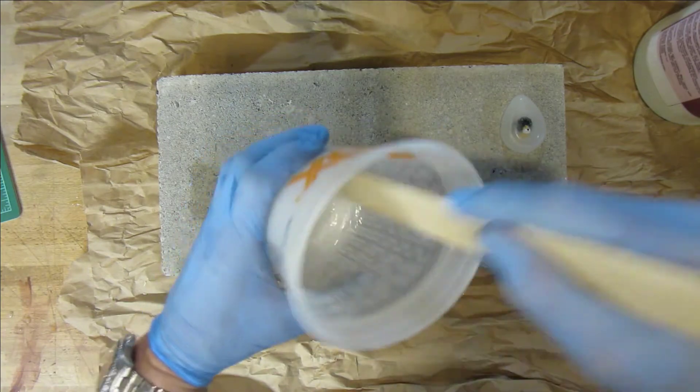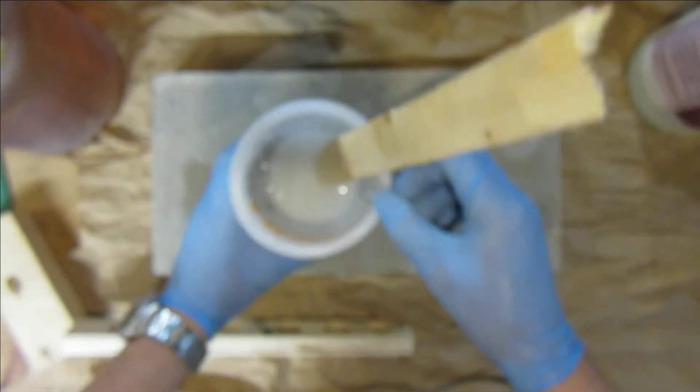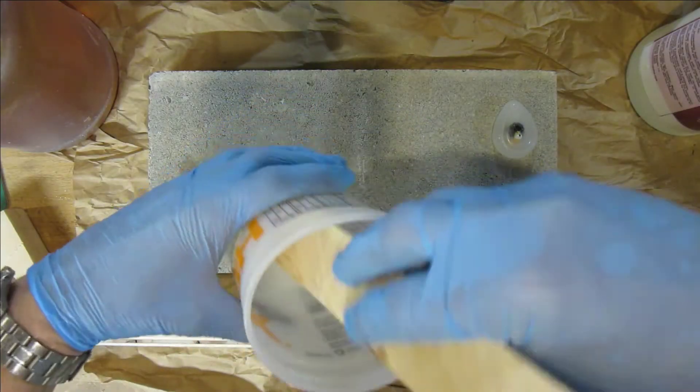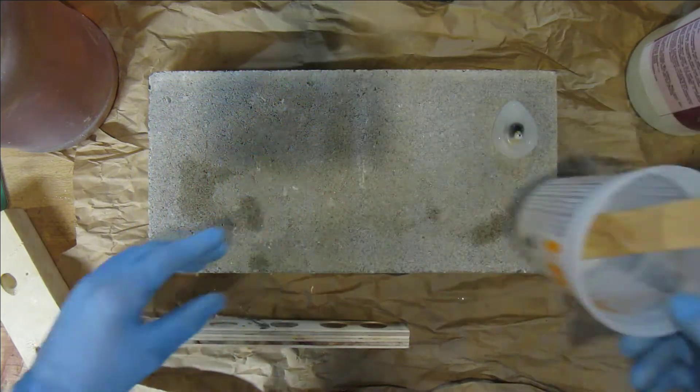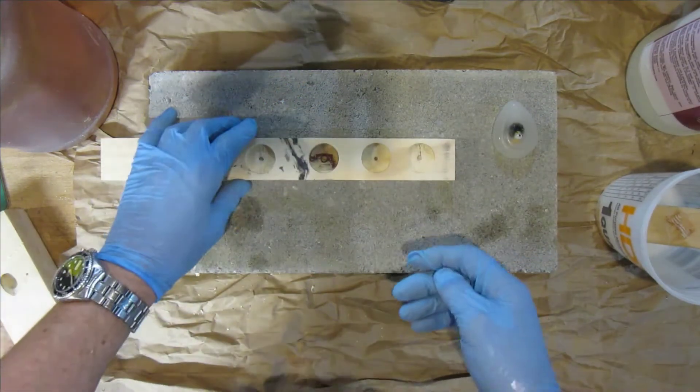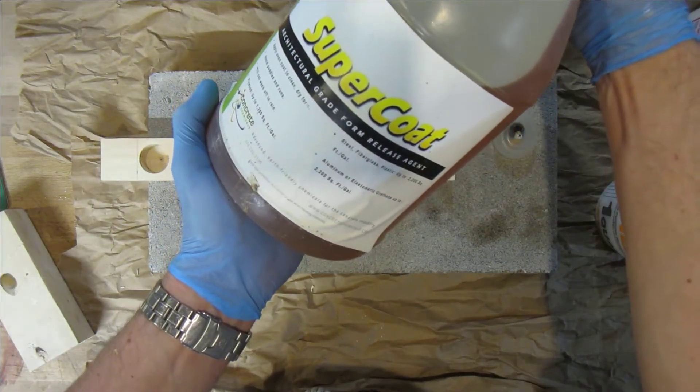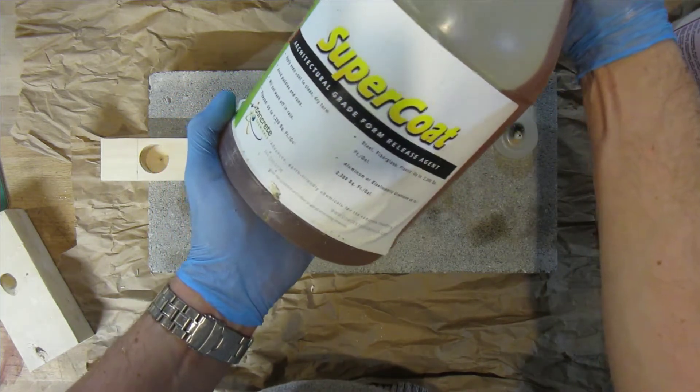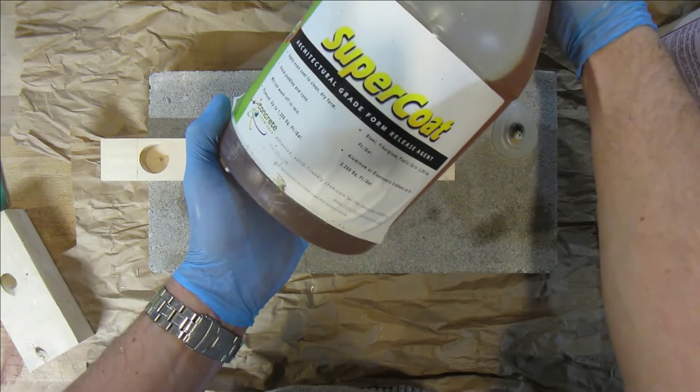So there we go, nice cloudy mixture. And I was thinking while we were at it we might as well test the efficacy of this stuff: Super Coat Architectural Grade Form Release Agent, super hero of the concrete world. I got this off eBay, was dead cheap, but it's some sort of oily thingy.